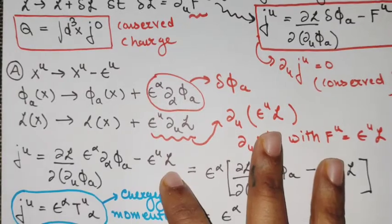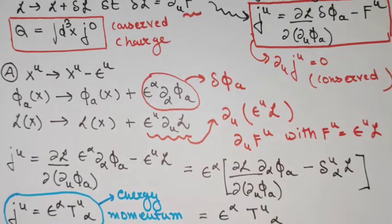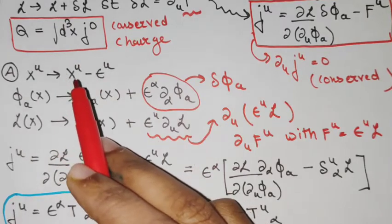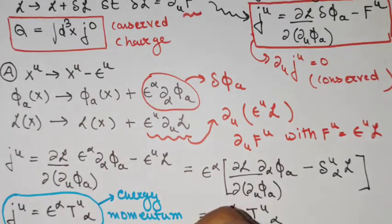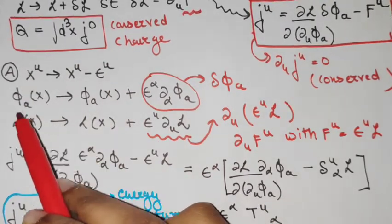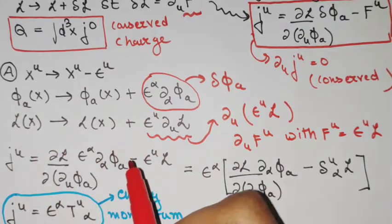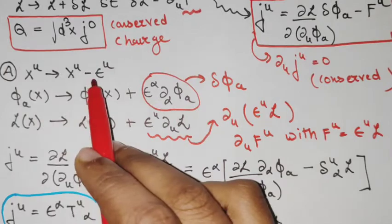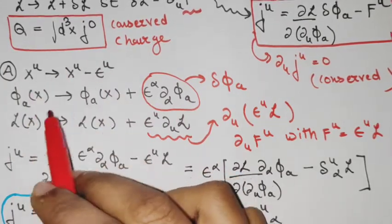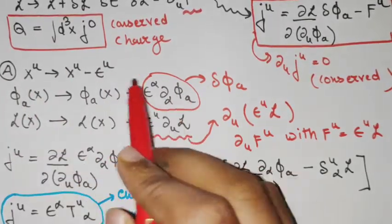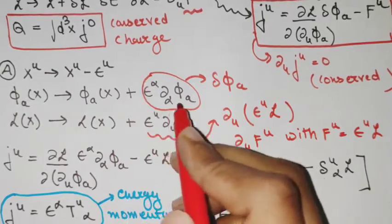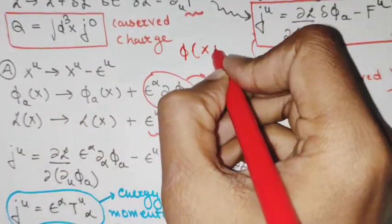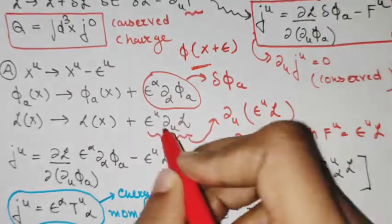Now we will see what conserved currents arise from performing Poincaré transformations on spacetime, which correspond to transformations on the field itself. Here phi is a real scalar field. Performing a translation will cause a change in the field: we take phi of x plus epsilon and do a Taylor expansion, giving us the delta phi_a.